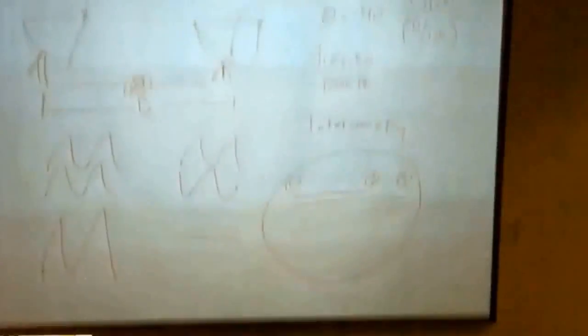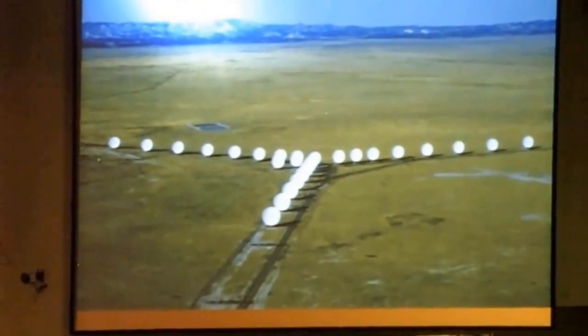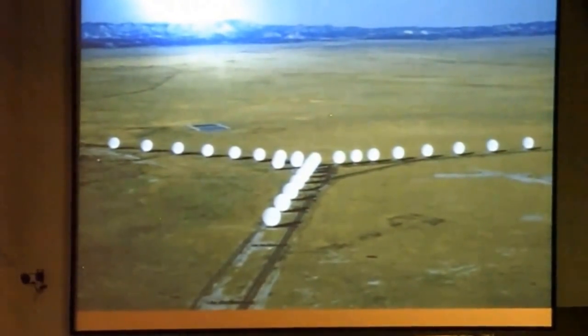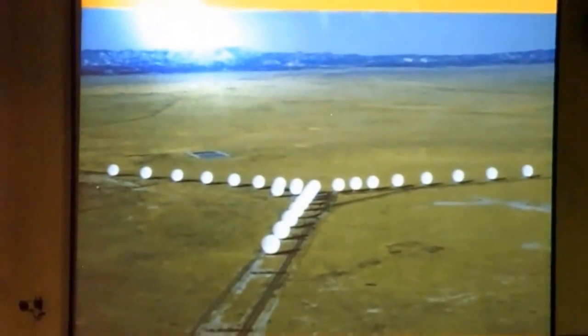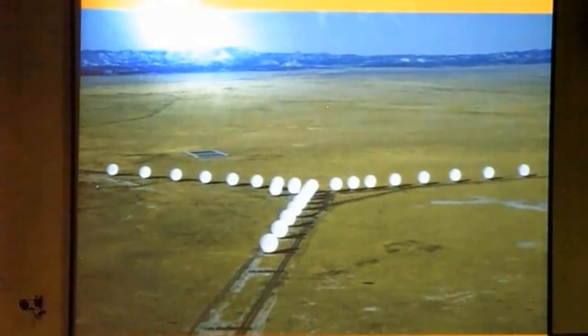So the next thing they built, this was the prototype effort for the VLA. So you've got the Green Bank interferometer, and then you have the real deal, the VLA. Very large array. Again, we're not very creative with their acronyms.